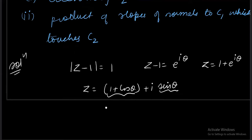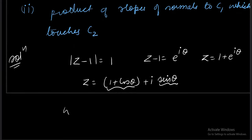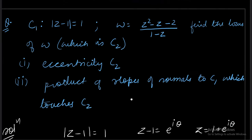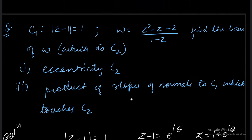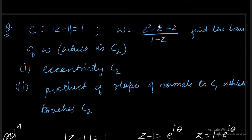So we have z as this one. What about omega now? Omega ka locus nikalna hai. And they have given me omega as z square minus z minus 2 upon 1 minus z.